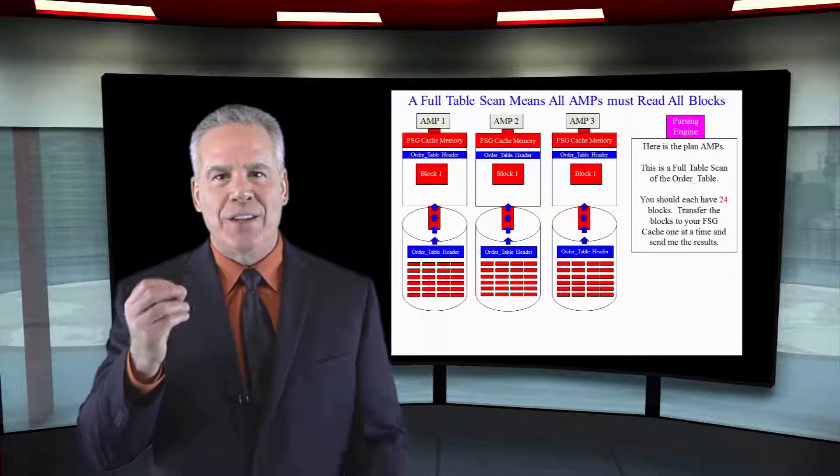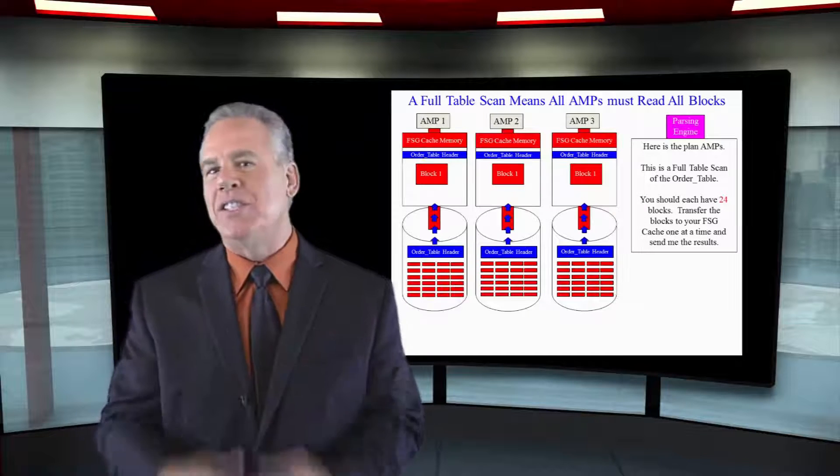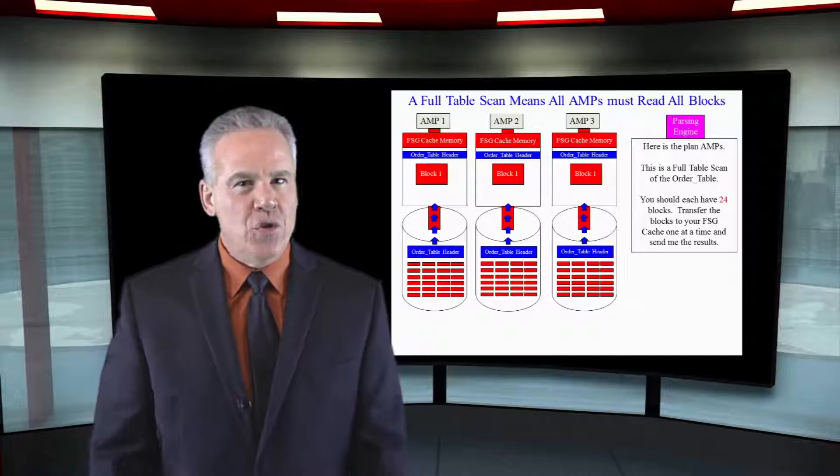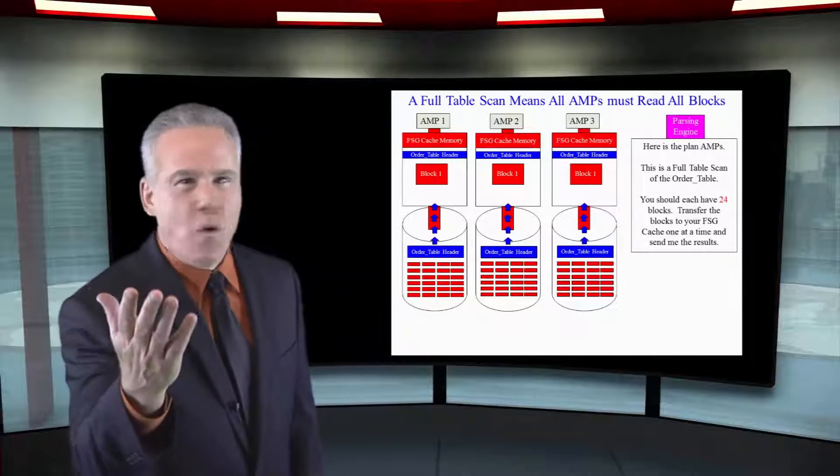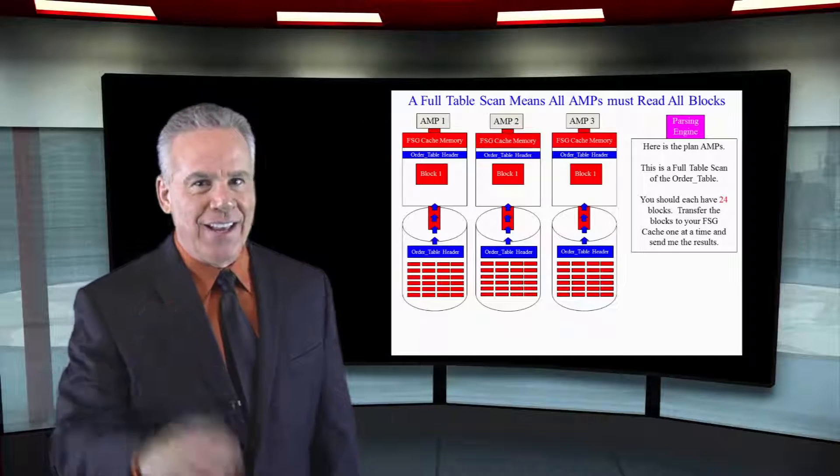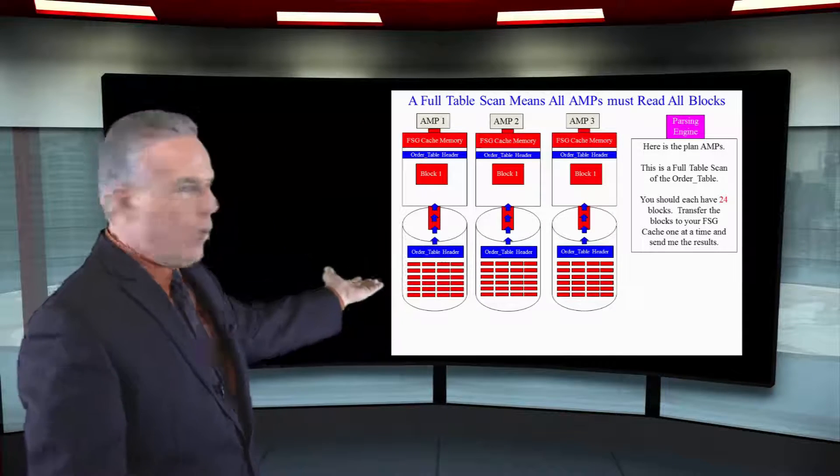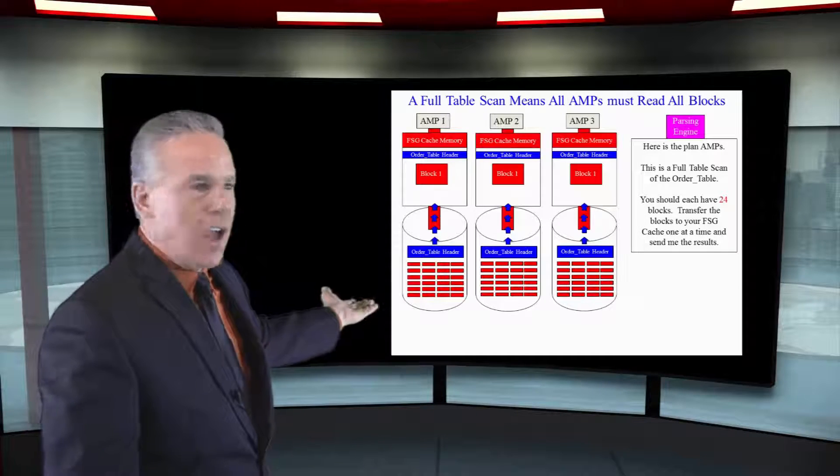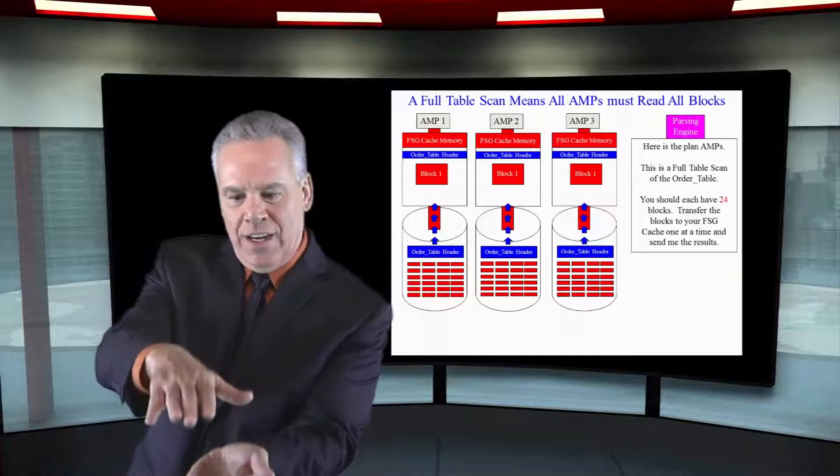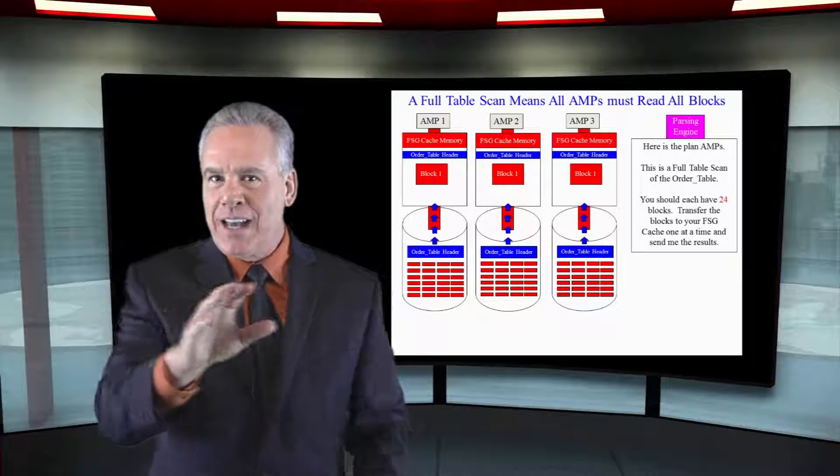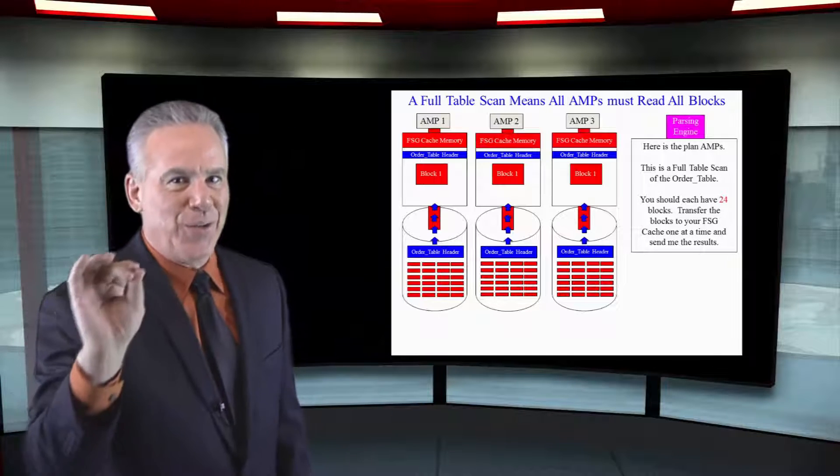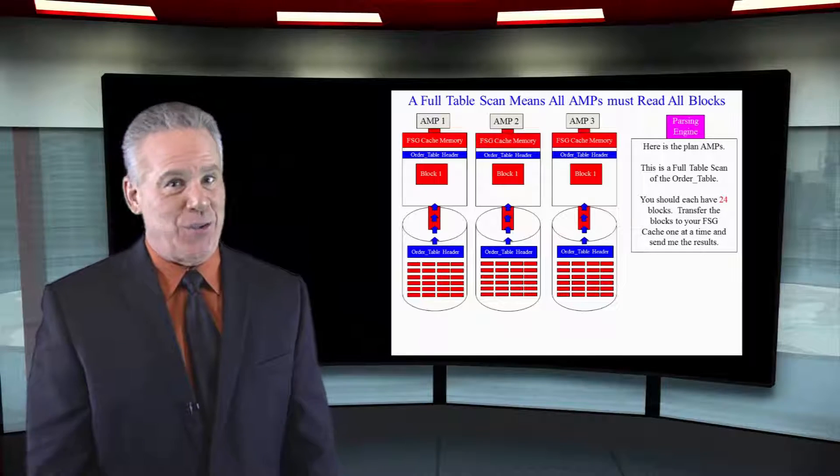We know Teradata is one of the fastest processing systems in the world, but did you know that some queries could take 40 hours? That's a lot of data. Now, as you can see here, if we have to do a full table scan on a large table, each amp brings in one block at a time and processes it until they're done. That's just the way it's going to work.